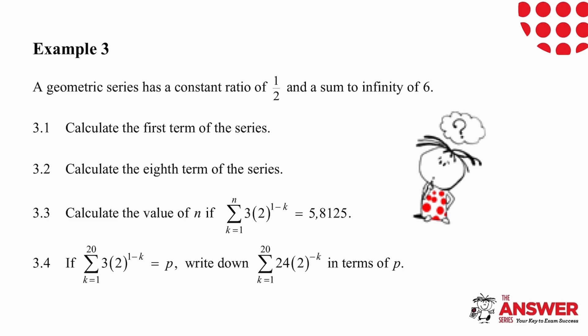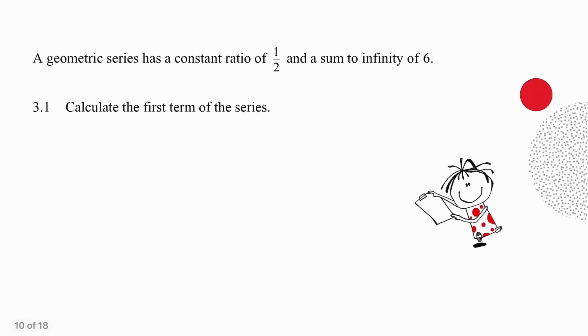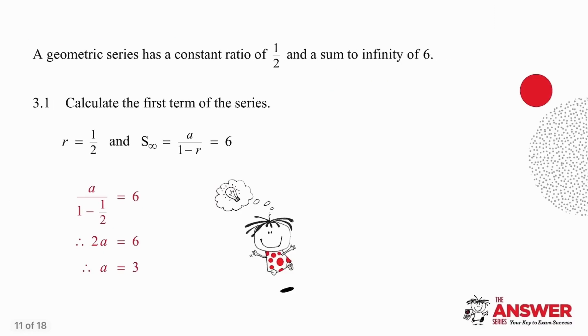This is the last example in this video. It's going to take you a while to get through these questions. I want you to pause the video, try each of these on your own and then I will go through them with you one at a time. What's slightly different in the question is that this time you're given the ratio and the result because you're given the sum to infinity. So your job is to work out the a value. You're simply going to write down the formula and then substitute. So substituting a half for the r value and 6 for the sum to infinity, you will find that 2a is equal to 6 and a is equal to 3.